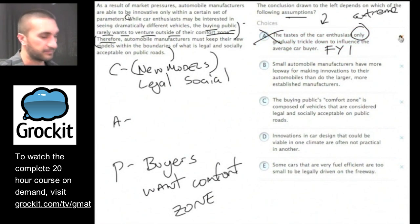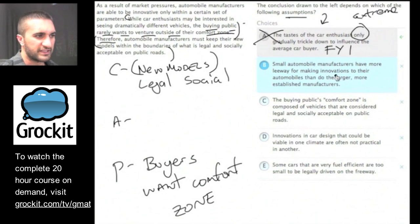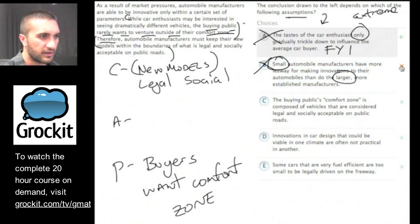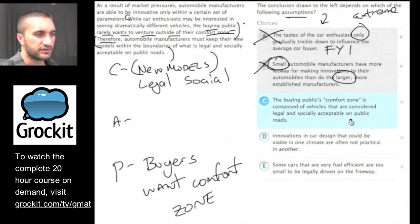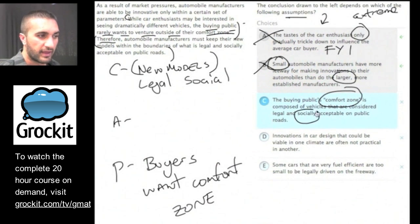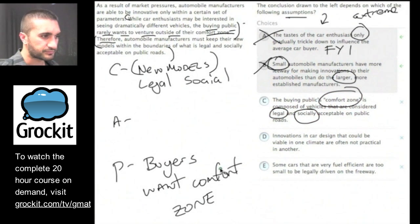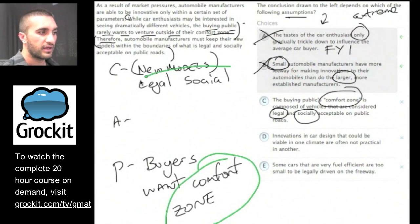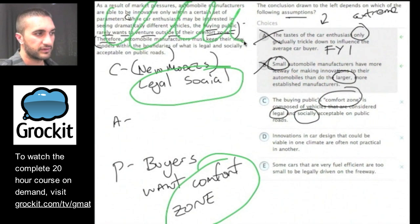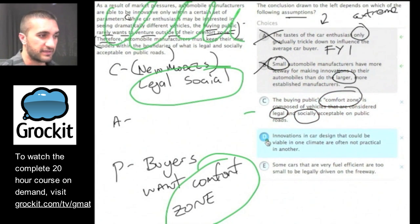Answer choice B: small automobile manufacturers have more leeway for innovations than larger ones. The comparison between small and large manufacturers doesn't seem relevant to this argument, so let's eliminate B. Answer choice C: the buying public's comfort zone is composed of vehicles that are considered legal and socially acceptable on public roads. Right away, 'comfort zone' appears in the premise and 'legally and socially acceptable' appears in the conclusion — this language links both. I like this answer choice; let's leave it.